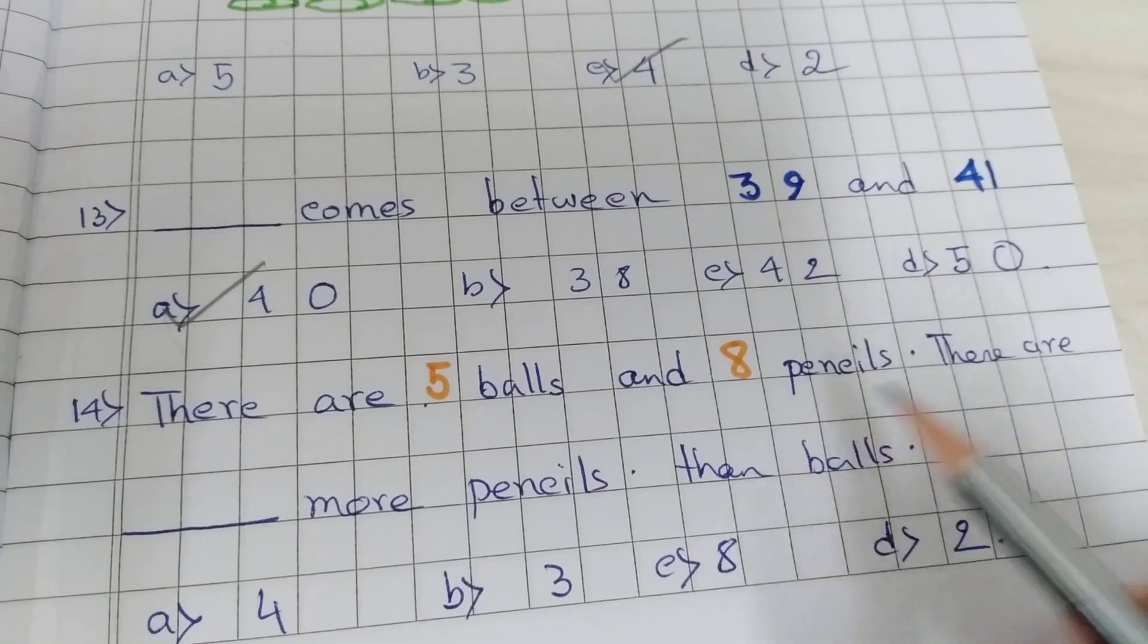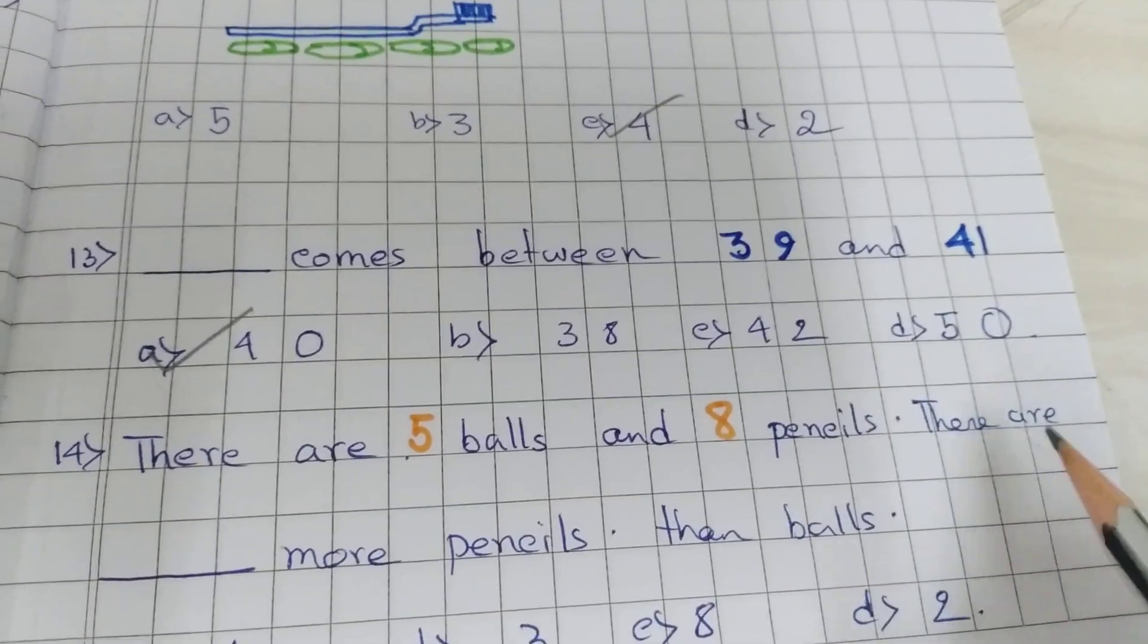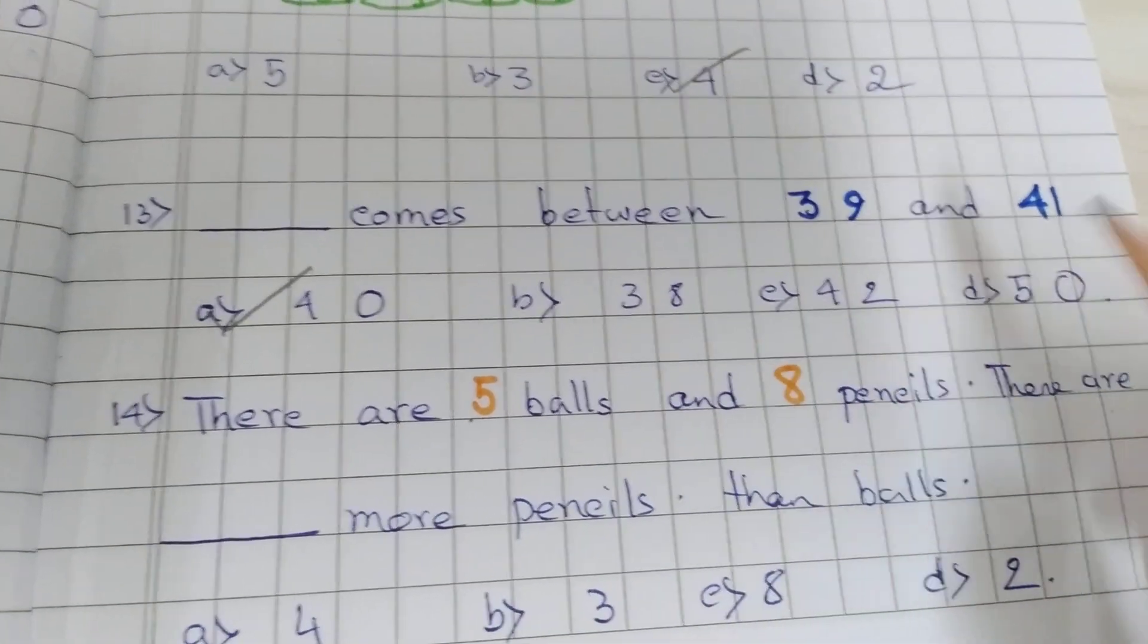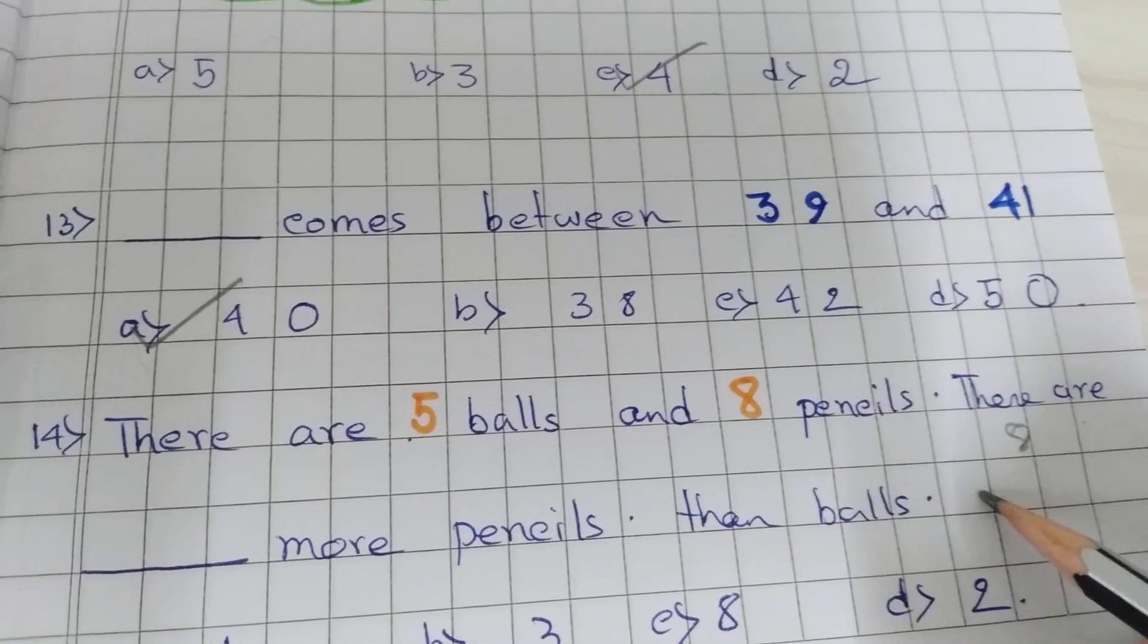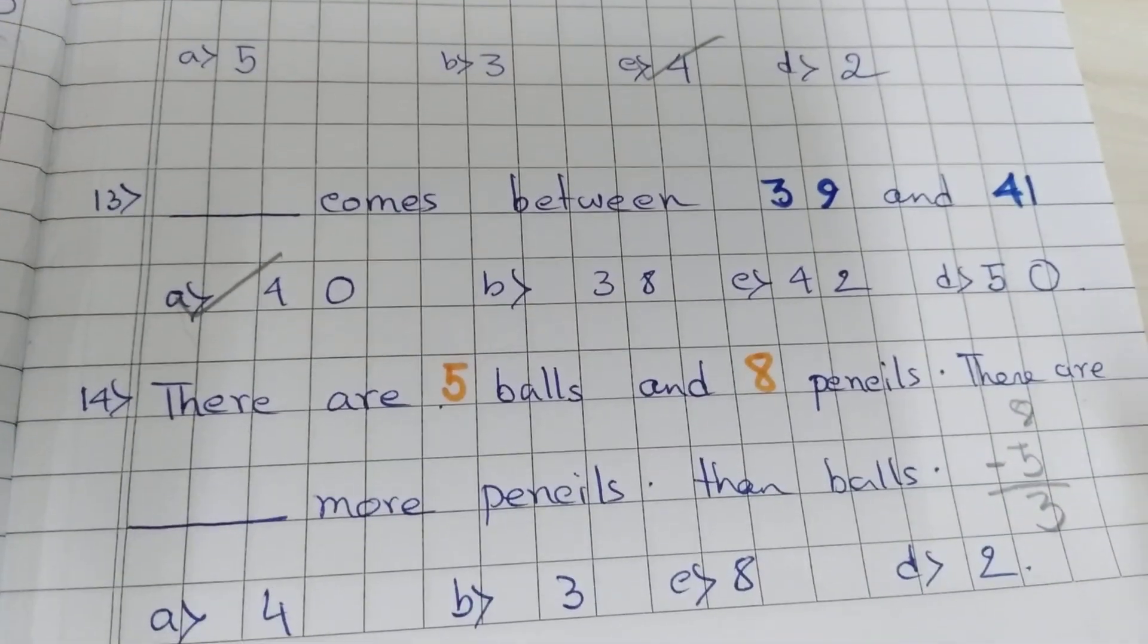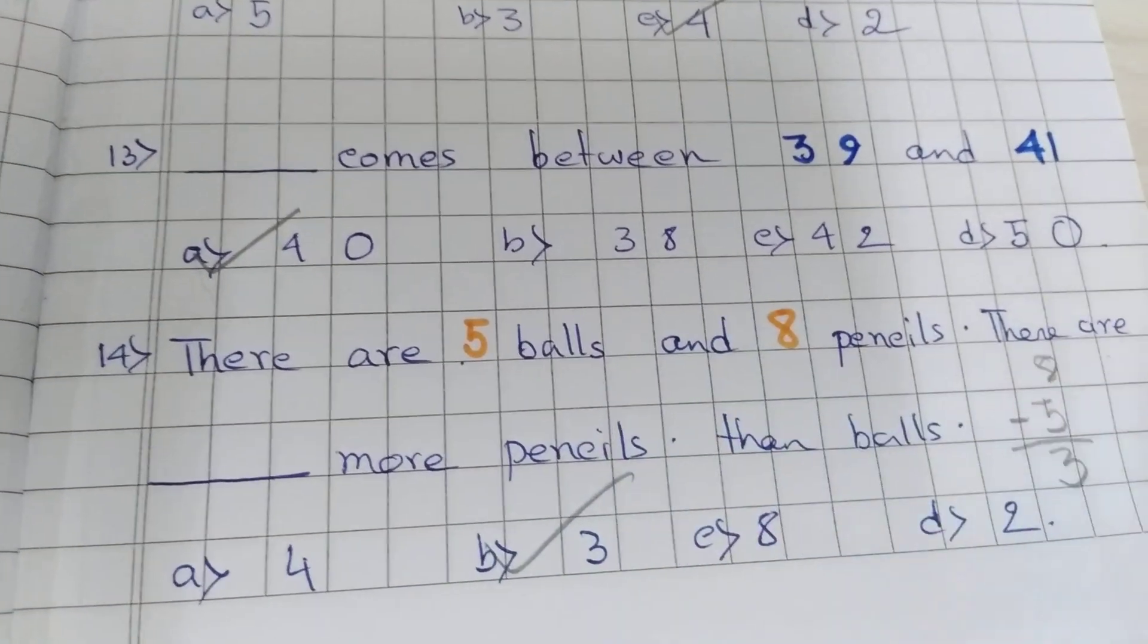There are 5 balls and 8 pencils. There are dash more pencils than balls. So 8 minus 5, 3. Option B is correct.